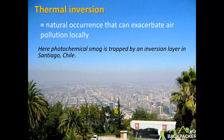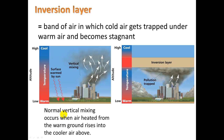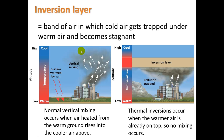Something that can exacerbate this is called a thermal inversion, a natural occurrence that can worsen air pollution locally. You can see photochemical smog trapped by an inversion layer in Santiago, Chile. An inversion layer is a band of air in which cold air gets trapped under warm air and becomes stagnant. Normally, vertical mixing occurs when air heated from the warm ground rises into the cooler air above it — all warm air rises, carrying pollution with it. But in a thermal inversion, the warmer air is already on top, so no mixing occurs. The rising warm air hits a ceiling of even warmer air and stays trapped and stagnant.